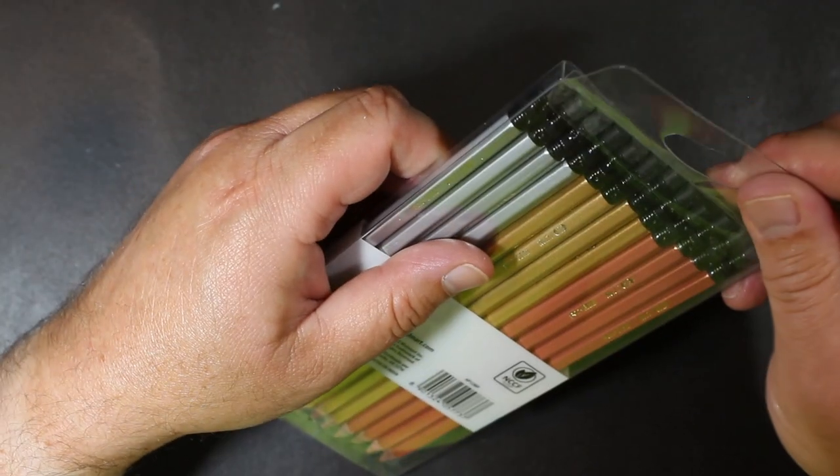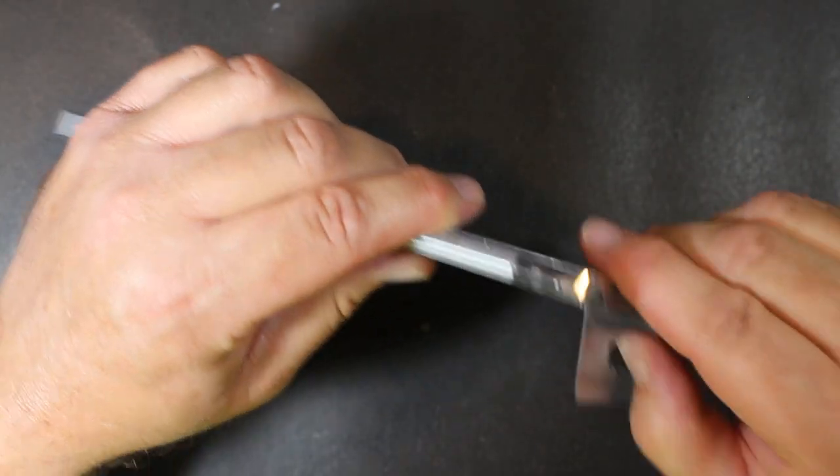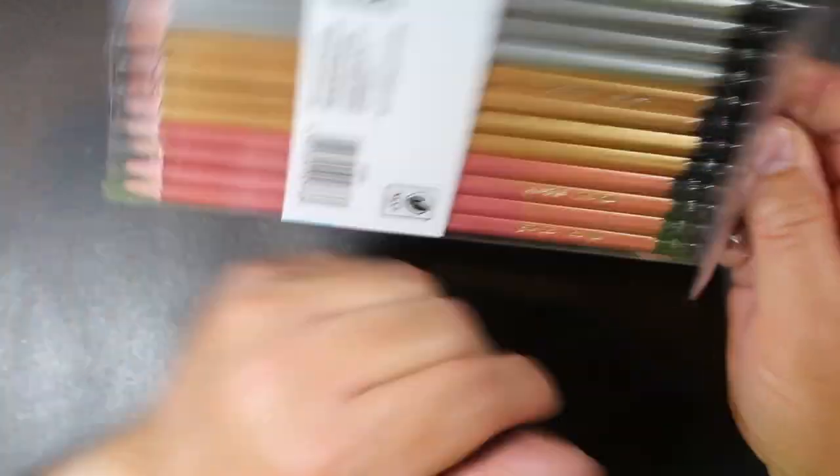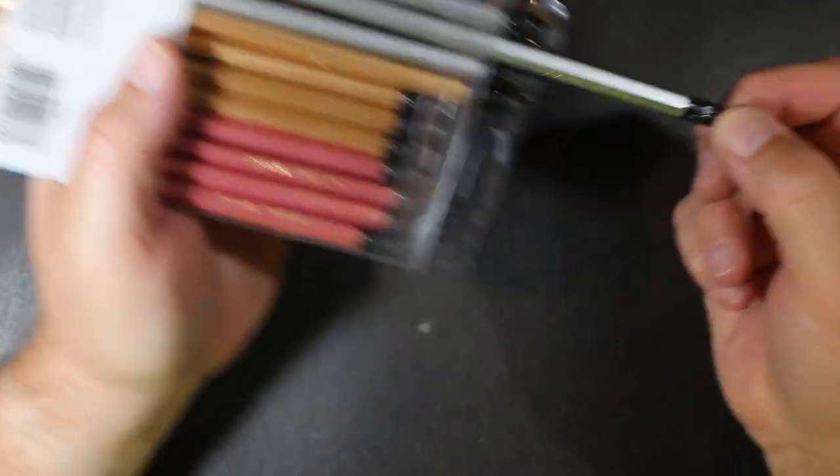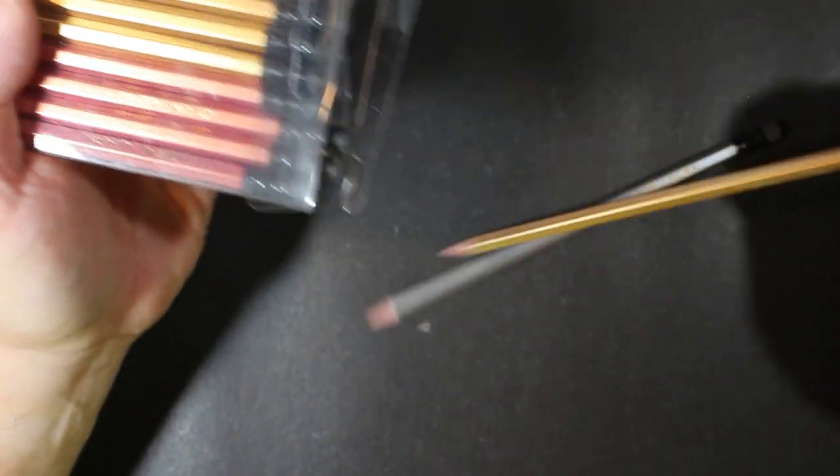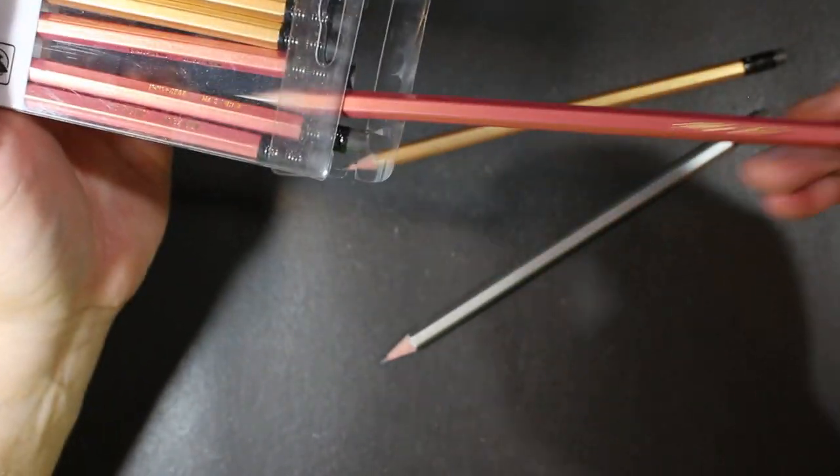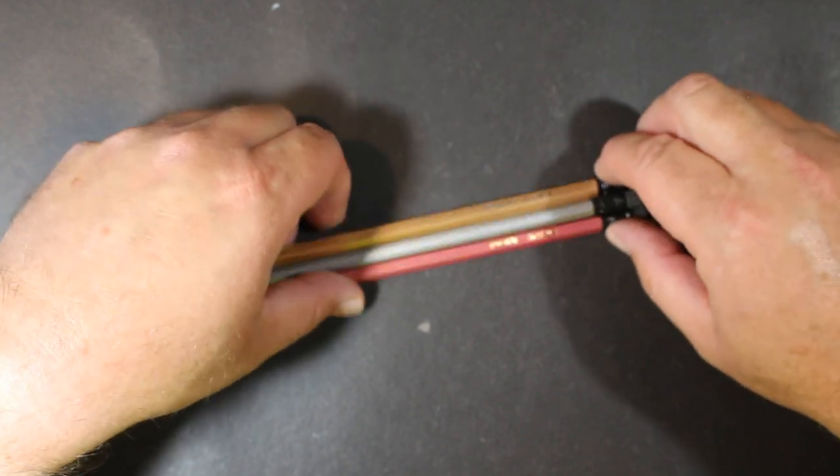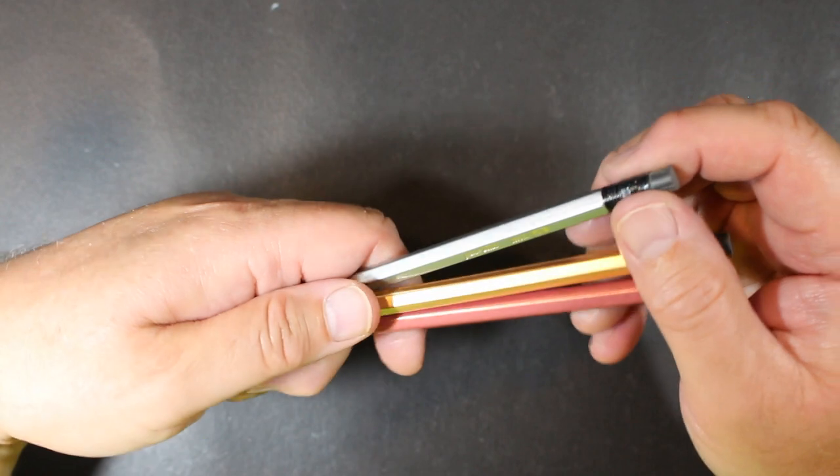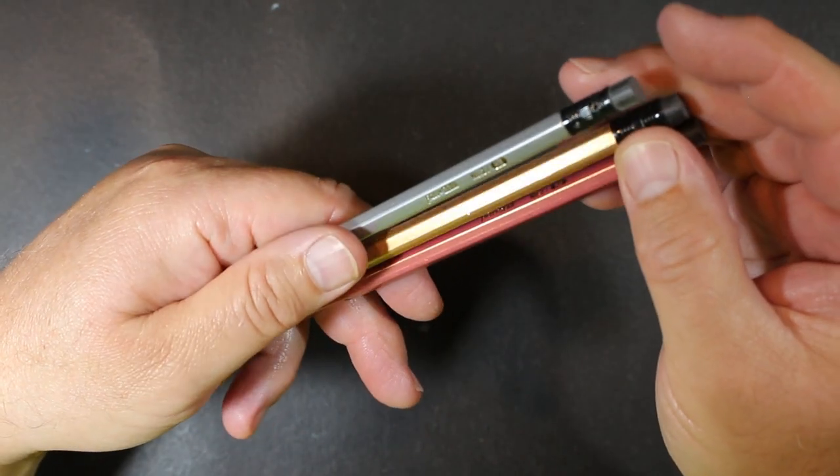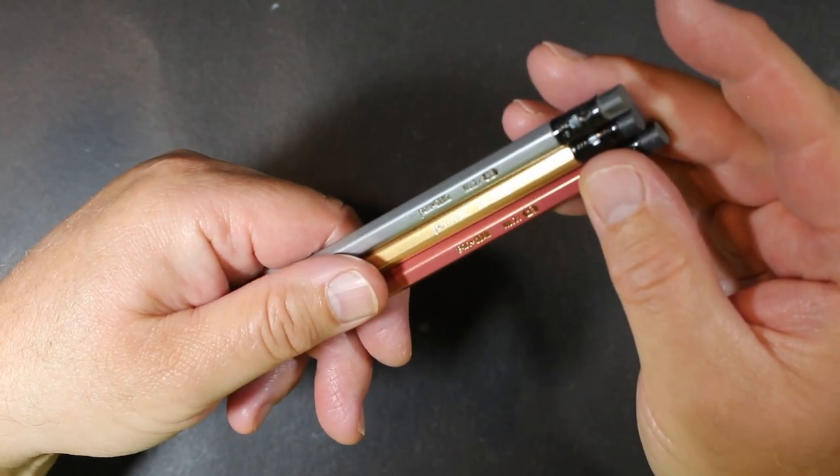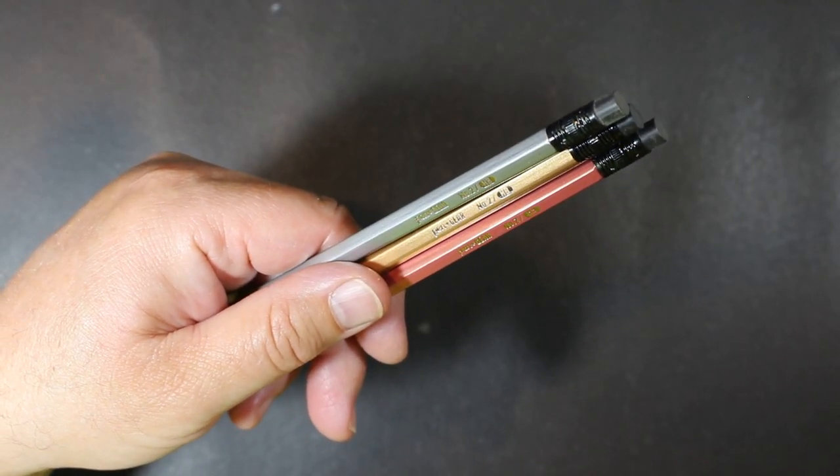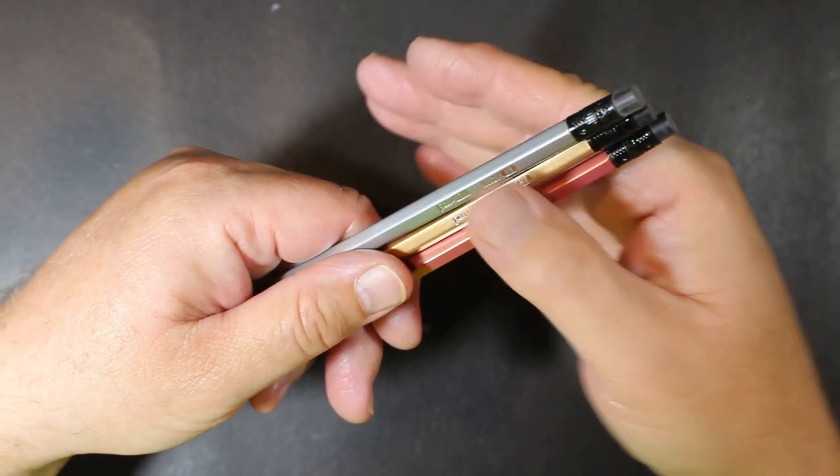I'm going to see if I can get them out without total destruction of the package. One of each, we can look at them. So we'll take out a silver, take out a gold, and we'll take out a bronze. Okay, so here we go. Let's look at it from this angle, if we can.